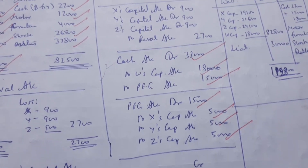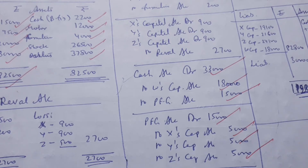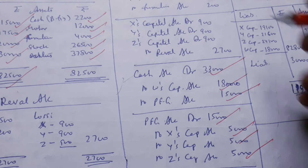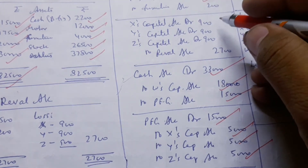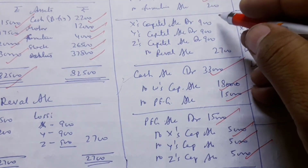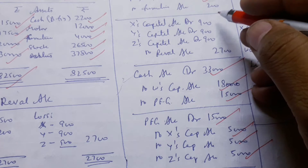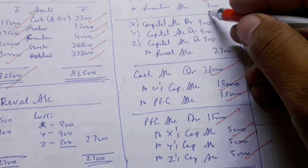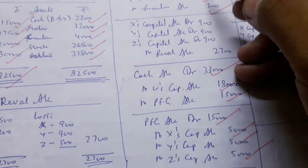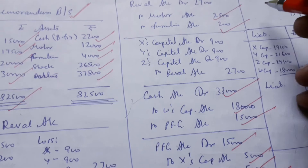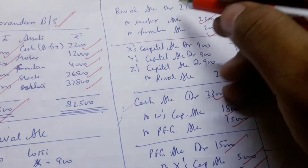In addition, the new value of the motor is $4,000, revised to $9,000. The new value of the furniture is $25,000. The revaluation account and capital account are updated accordingly, with motor and furniture adjustments of $2,000 each.